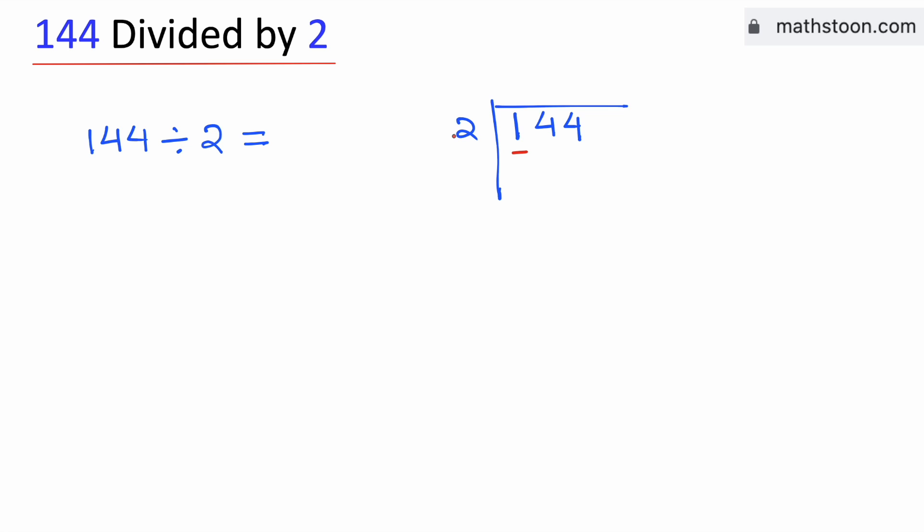As 1 is less than 2, we will consider the 2 digits, that is the number 14. We know that 2 times 7 is 14. If we subtract, we get 0.